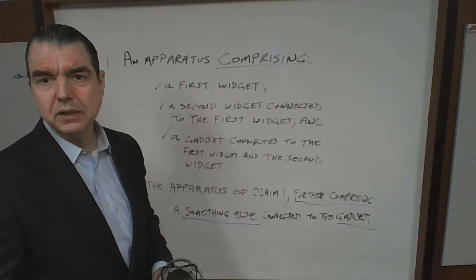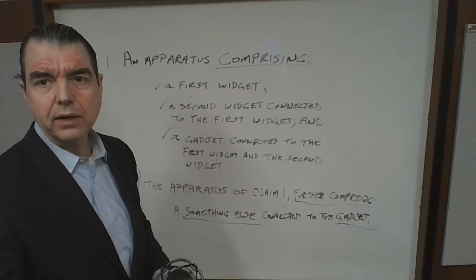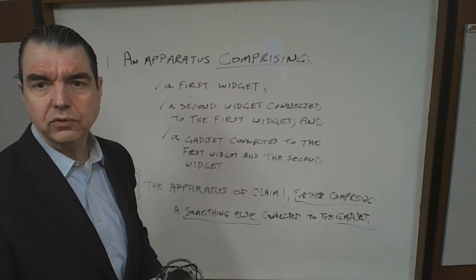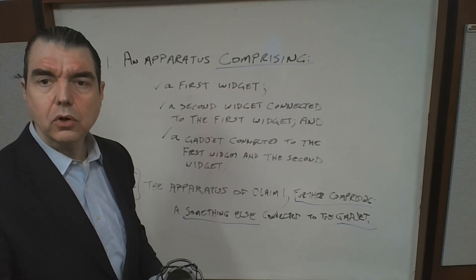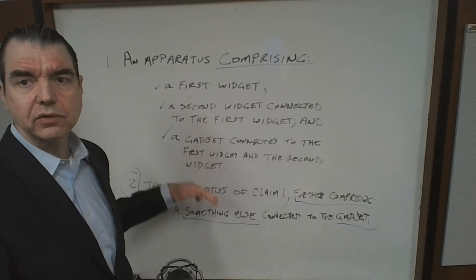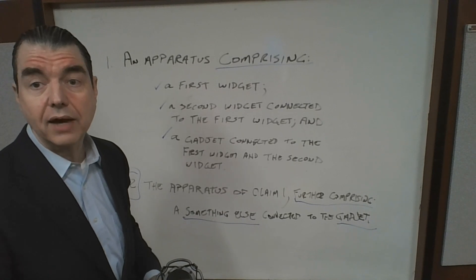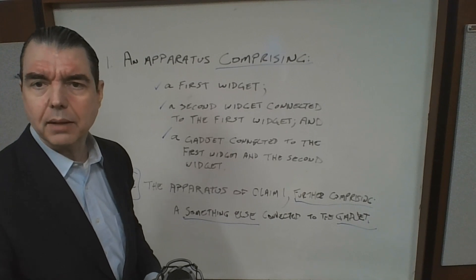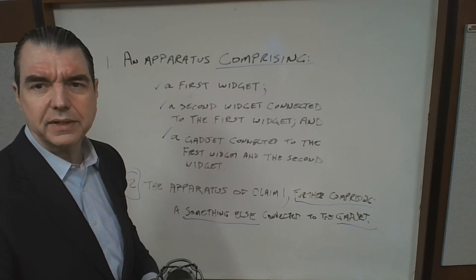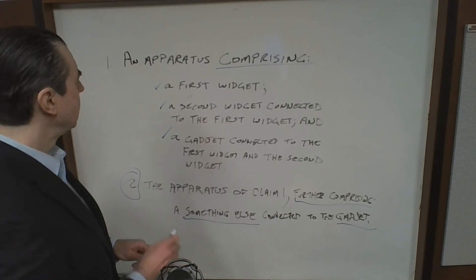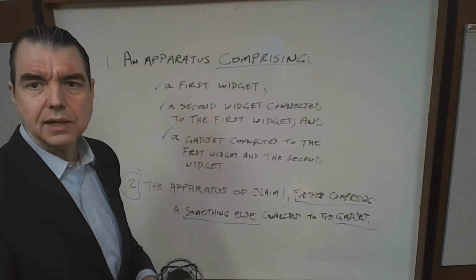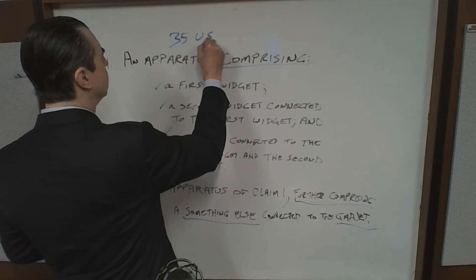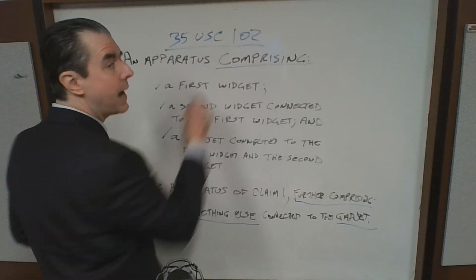What does the USPTO examiner do when they receive your patent application and have to process it? They're going to look for what's called prior art. They're going to look at the limitations of your claims as your patent attorney has drafted, or as you have drafted if you're filing the patent application yourself. And they're going to look to that prior art to find those limitations. For the examiner to do a novelty rejection, novelty is under 35 USC section 102 of the patent law.